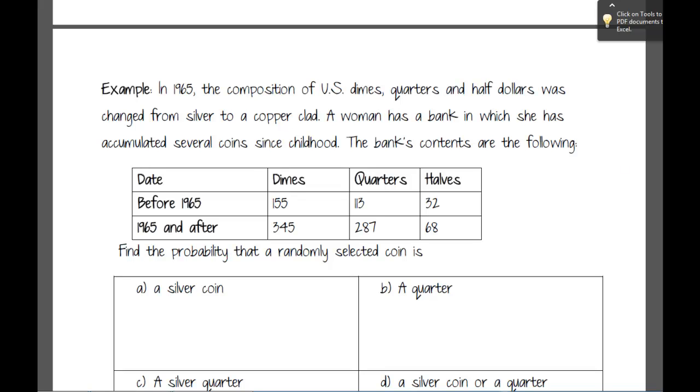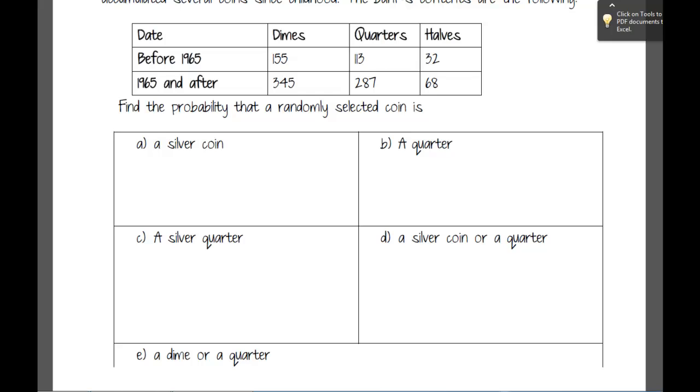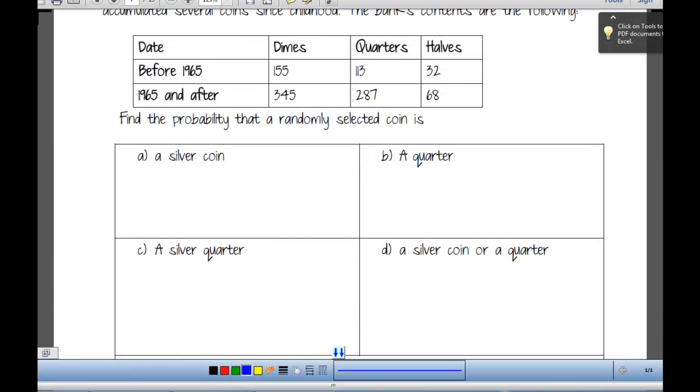Find the probability that a randomly selected coin is a silver coin. We'll start there. To do this, we would look at our basic formula for probability. If we're interested in probability of silver, then we need to look at the number of silver coins divided by the total. We can almost always bring probability back to this basic type formula. Number of silver coins divided by the total. Let me read this again. Aren't all these coins silver? What did I miss? Oh, okay, before 65 they were silver, right? So then we need to figure out the total number of silver coins. Add those numbers together.